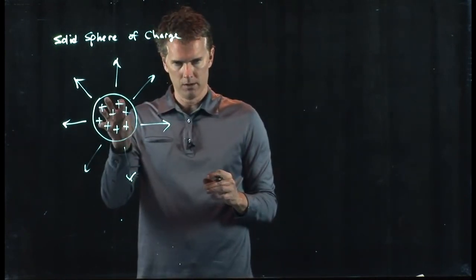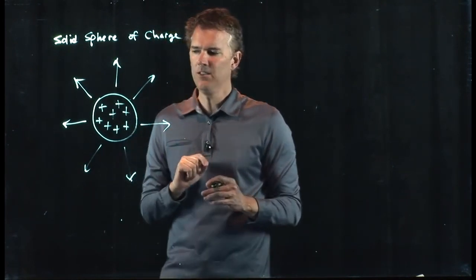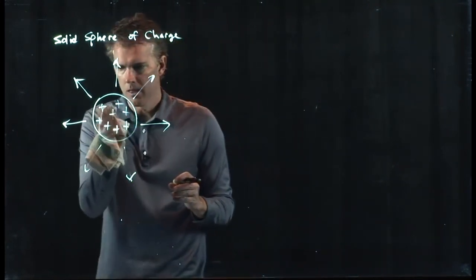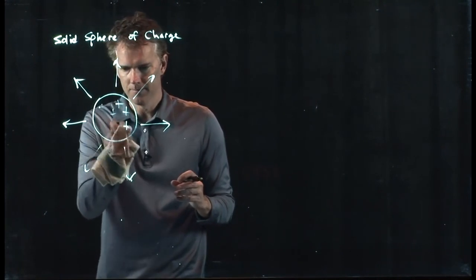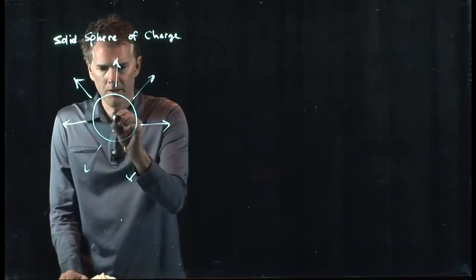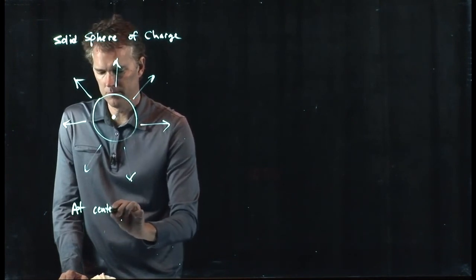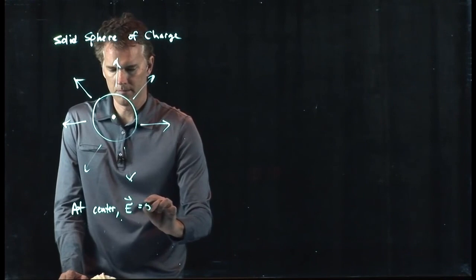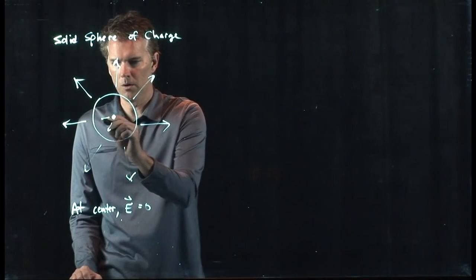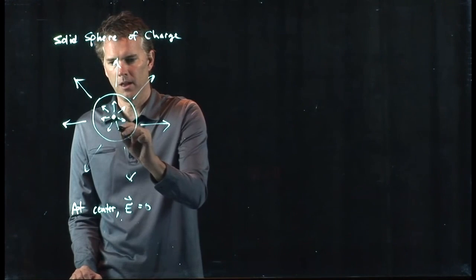That's the electric field outside the sphere. What about the electric field inside the sphere? If it's uniformly charged everywhere, then inside the sphere, we're going to have the following. Right at the center, E equals zero. But as soon as you go out from the center, it starts to go radial again. And it increases its strength as you go out.